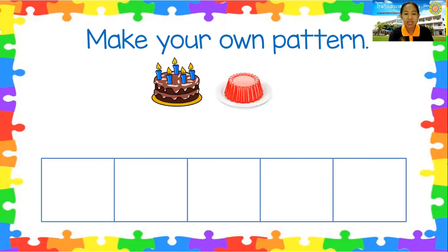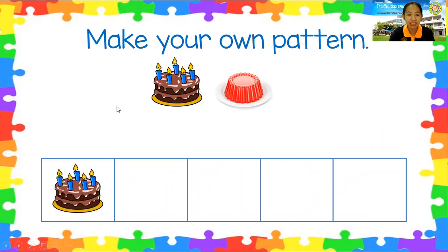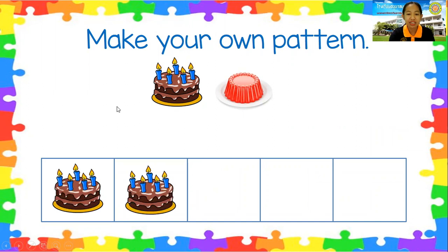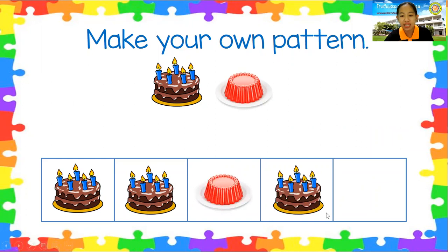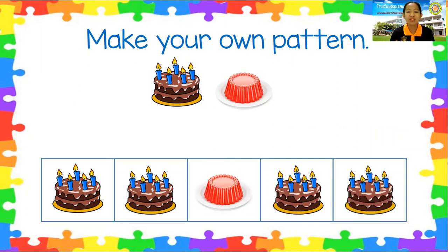Next one is cake and jelly. The pattern is cake, cake, jelly, cake. What is the next pattern? It's cake. Very good, that is correct.